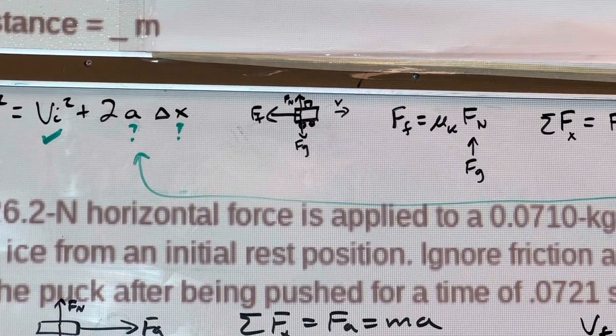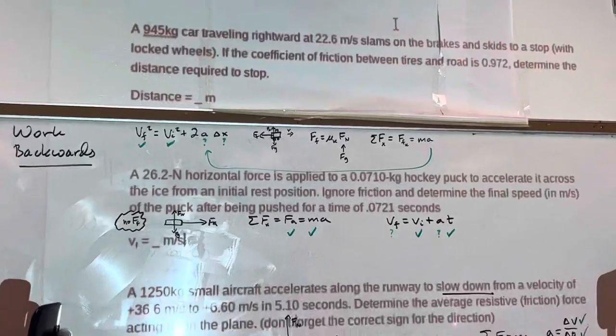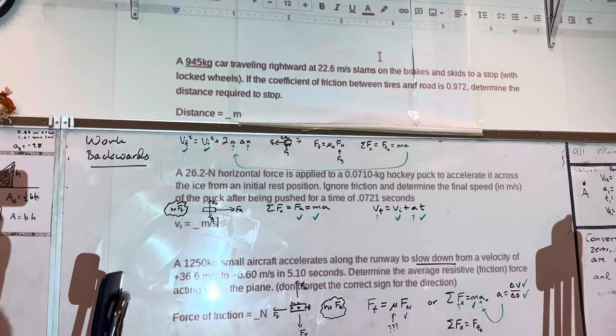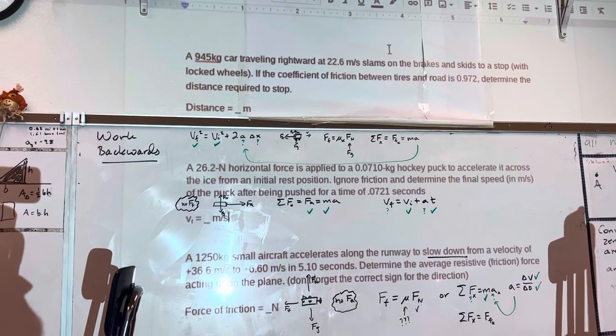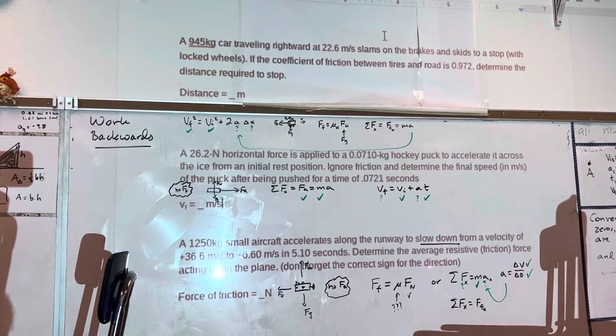So we want to figure out, given the coefficient of friction, we want to figure out the distance required to stop. So you have to do this work backwards. You got to think, where do I know distance?